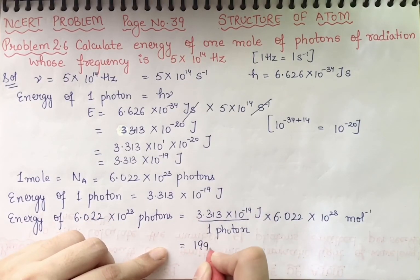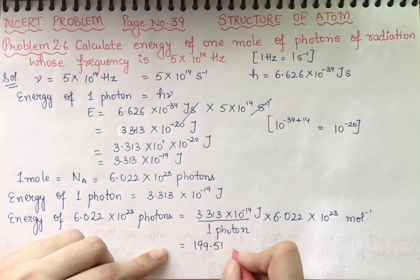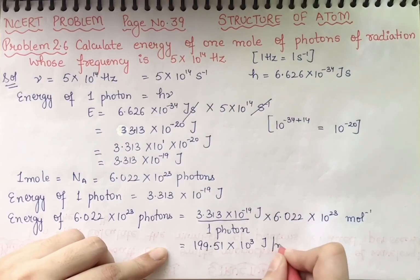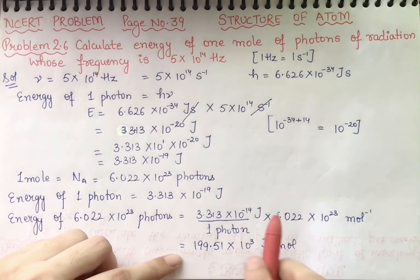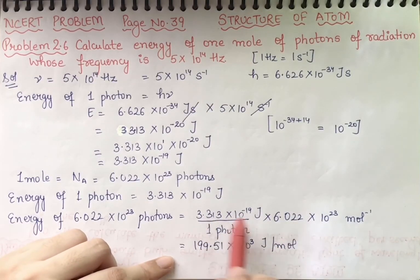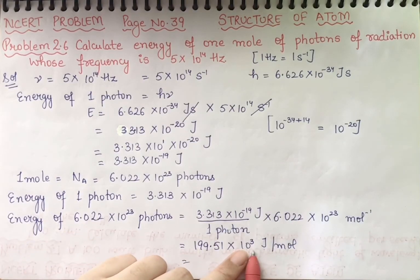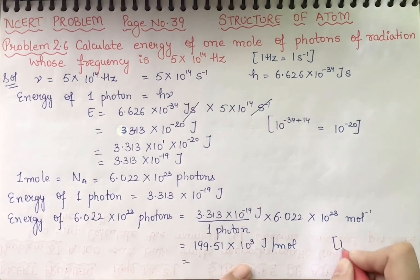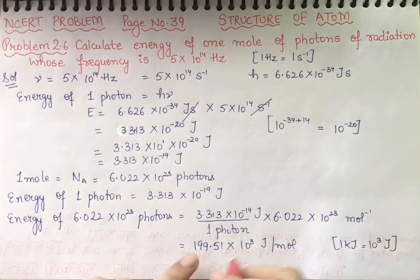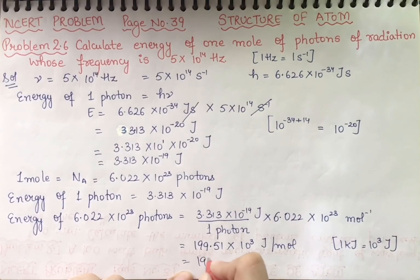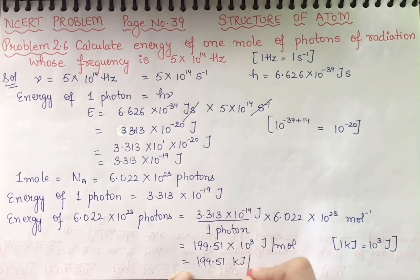Multiplying and simplifying the powers gives 199.51×10³ J/mol. Since 1 kJ = 10³ J, the final answer is 199.51 kJ/mol.